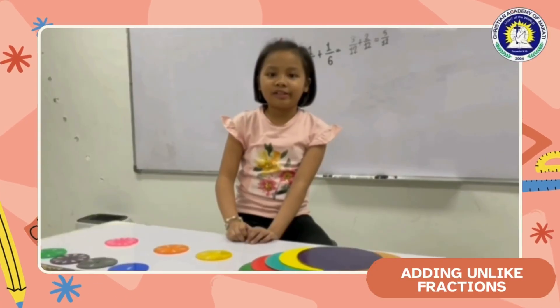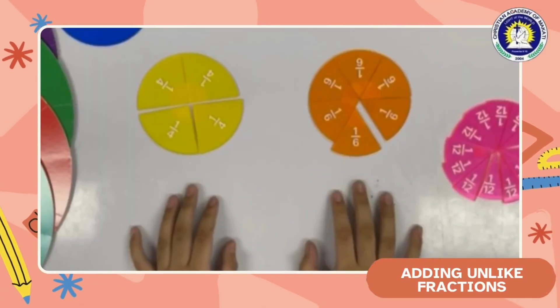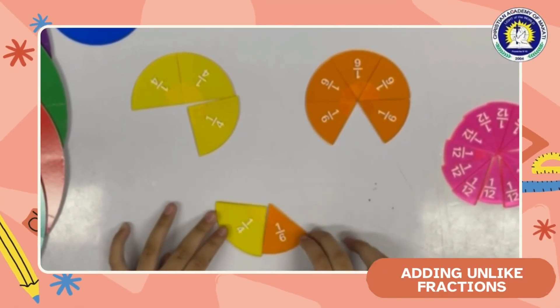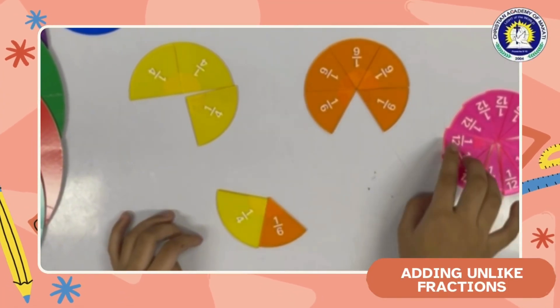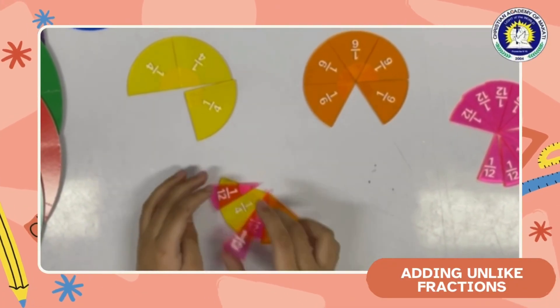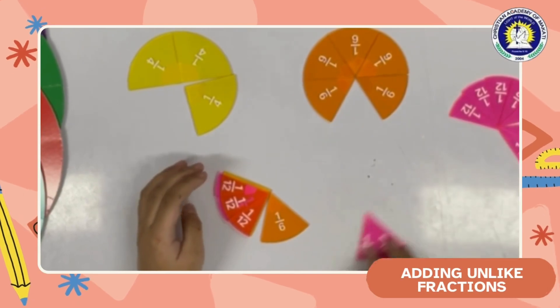And now we will be using the fraction circles. So let us add 1 fourth and 1 sixth. So 1 fourth is equivalent to 3 twelfths, and 1 sixth is equivalent to 2 twelfths.